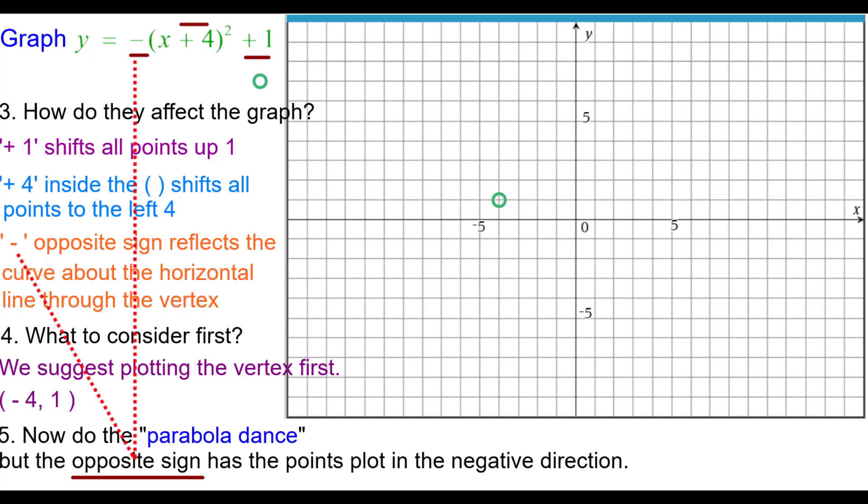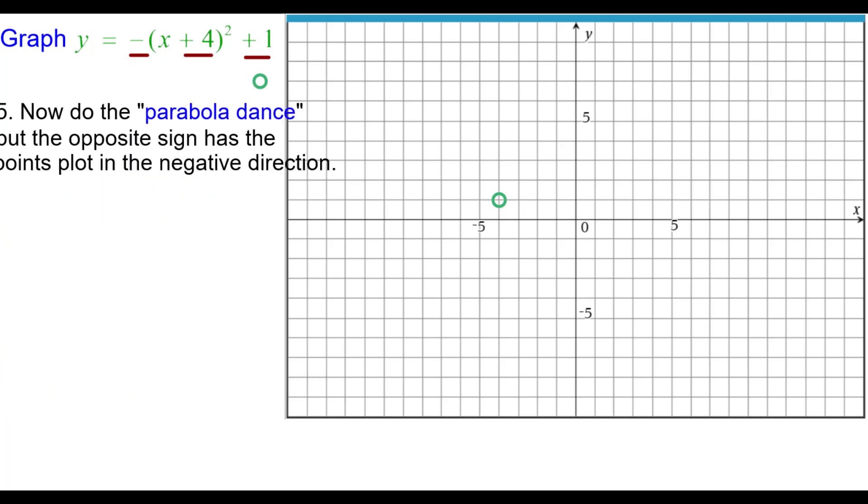Now we do what we call the parabola dance. But we use the opposite sign and that puts the points in the negative or opposite direction. For example, normally we go right 1 up 1 on our parabola dance. But in this case, we're going to go right 1 down 1 because it goes in the negative direction. That's what that opposite does.